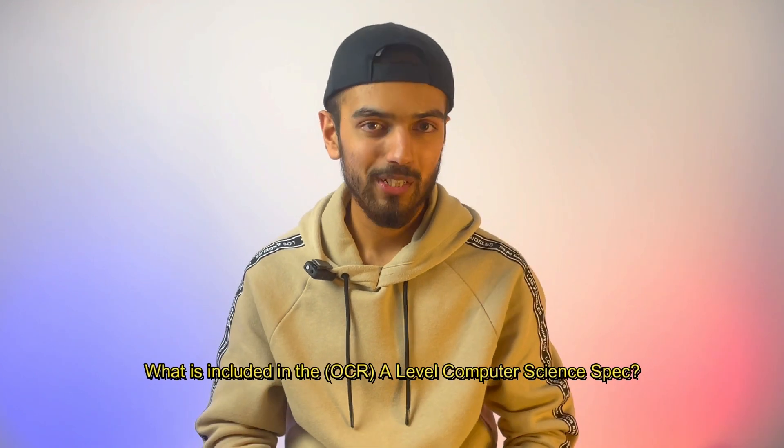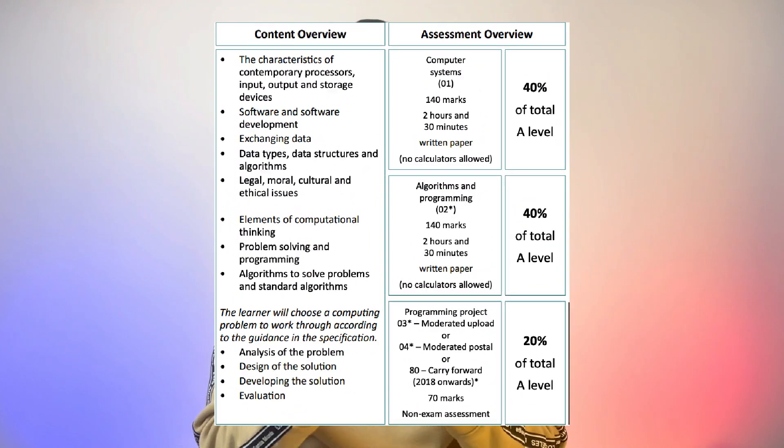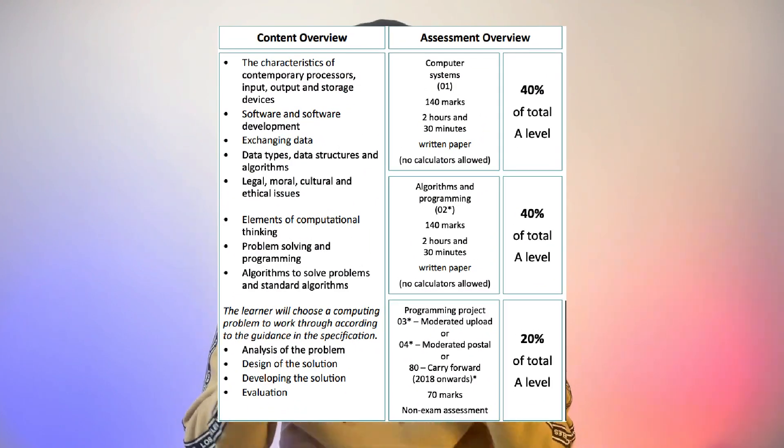A-level maths, A-level computer science, and A-level further maths is the best trio if you want to go to Oxford or Cambridge. The next big question students often have is: what is included in the A-level computer science specification? There are two papers — Paper 1 and Paper 2 — very similar to GCSE. Paper 1 is the theoretical side and Paper 2 is the practical side.